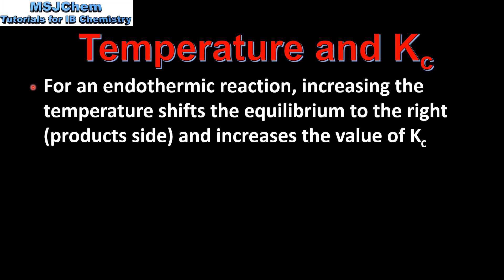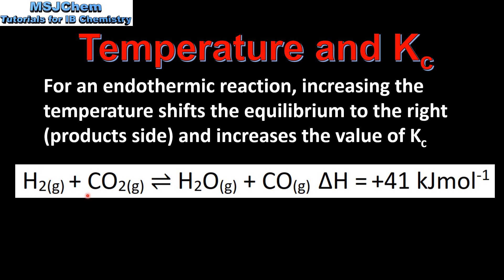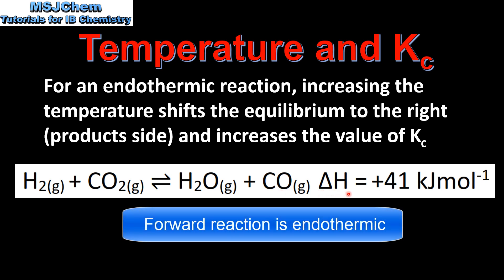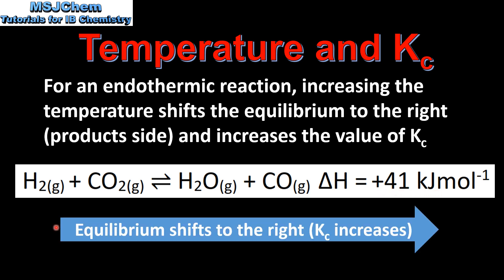For an endothermic reaction, increasing the temperature shifts the equilibrium to the right — the product side — and increases the value of Kc. For example, the reaction of hydrogen with carbon dioxide to form water and carbon monoxide has an enthalpy change of +41 kJ per mole, making it endothermic. So increasing the temperature shifts equilibrium to the right and Kc increases.